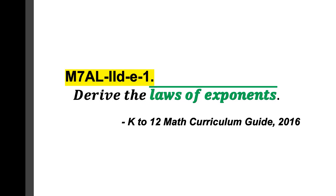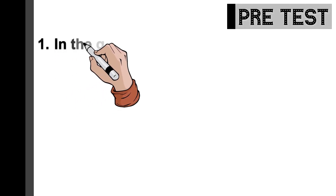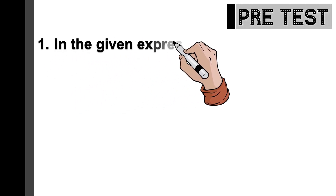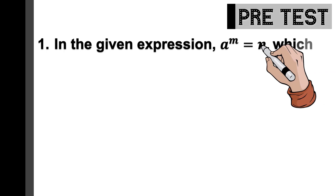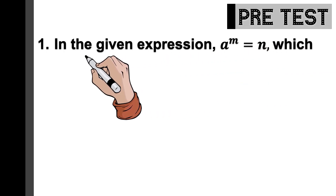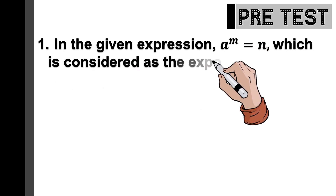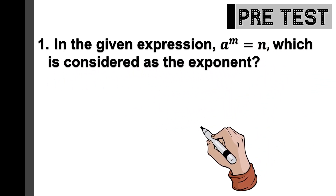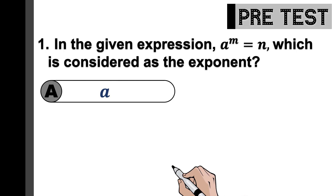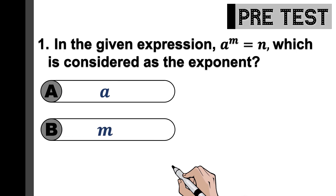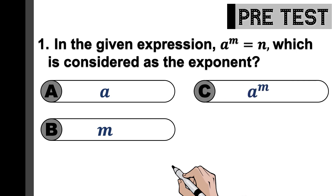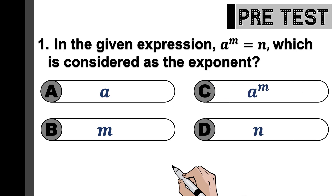To start off, let us have this pre-test. Number 1: In the given expression, a to the power of m equals n, which is considered as the exponent? A, is it the variable a? B, is it m? C, is it a to the power of m? Or D, is it n? You have 5 seconds to answer this.